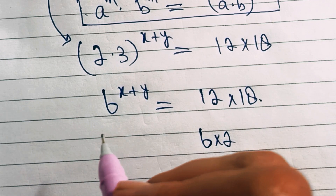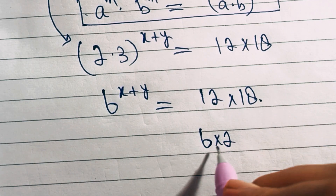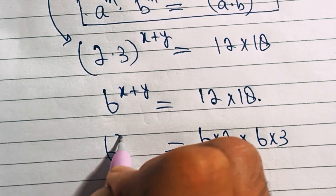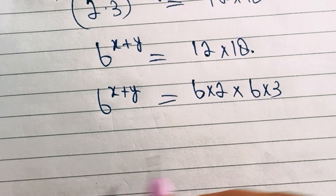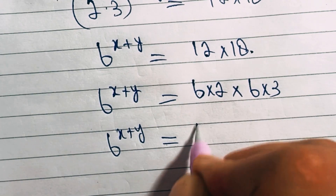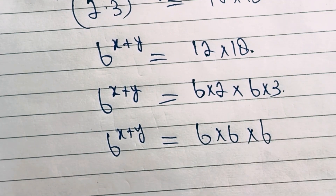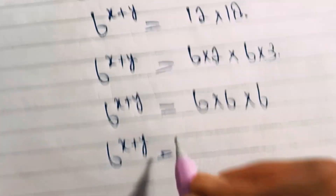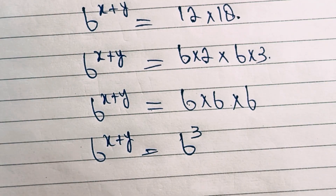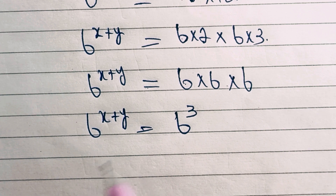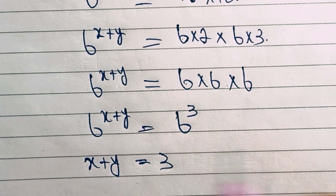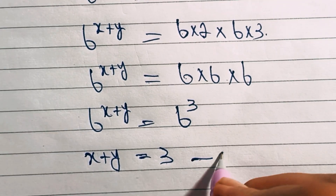Now we break these numbers into factors. 12 can be written as 6 times 2, and 18 can be written as 6 times 3. So 6^(x+y) equals 6 times 2 times 6 times 3, which is 6 times 6 times 6, giving us 6^3. Since both sides have the same base, the powers are equal, so x plus y equals 3. Let's call this equation three.